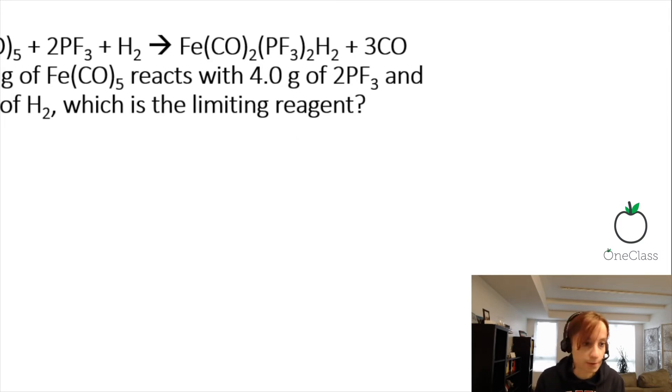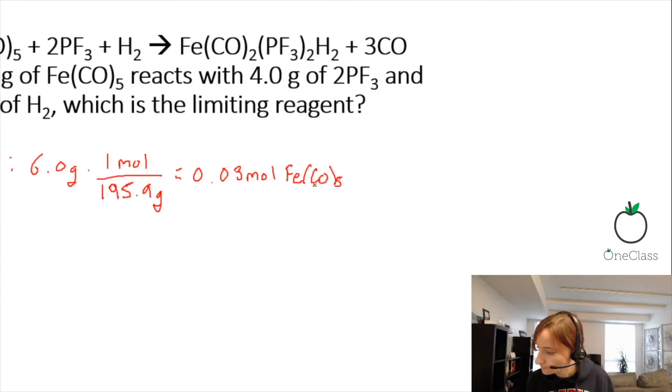So for iron CO5, we have 6 grams. I already calculated out the molecular weight, so to get it into moles, we're going to divide it by 195.9 grams. So this gives us 0.03 moles of FeCO5.